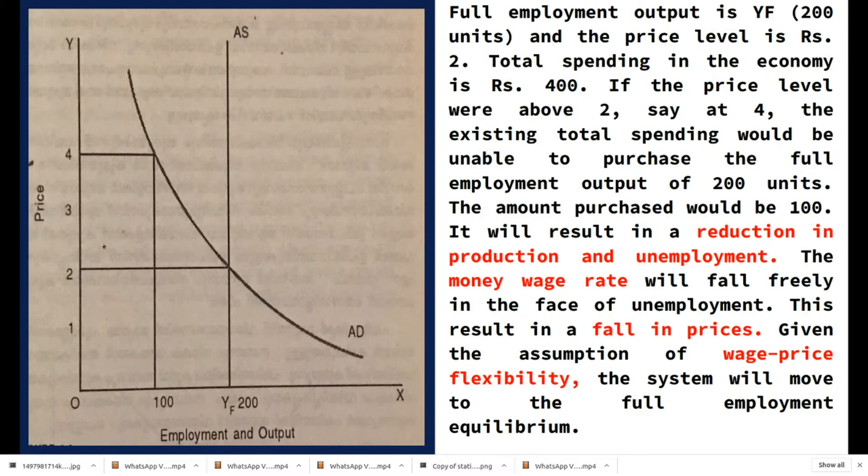This can be explained with the help of a figure. In the figure, full employment output is YF with 200 units of output. On the horizontal axis we represent employment and output, and on the vertical axis we represent price. Full employment output is YF where 200 units of output is produced and the corresponding price level is rupees 2.